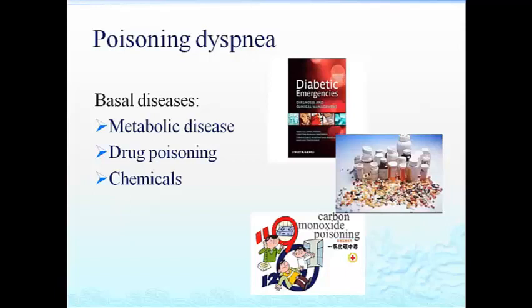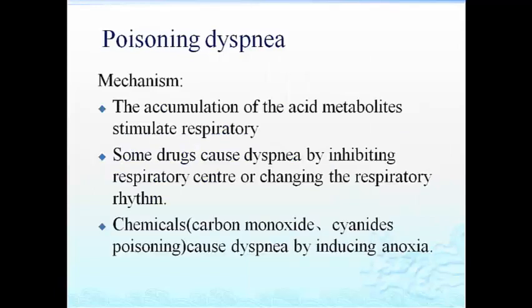There can also be poisoning dyspnea from metabolic disease, drug poisoning, and chemicals. The mechanism involves accumulation of acid metabolites stimulating respiratory centers. Some drugs cause dyspnea by inhibiting the respiratory system or changing the respiratory rhythm. Certain chemicals like carbon monoxide and cyanide poisoning cause dyspnea by inducing hypoxia.